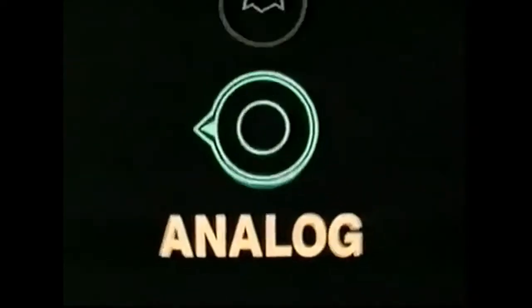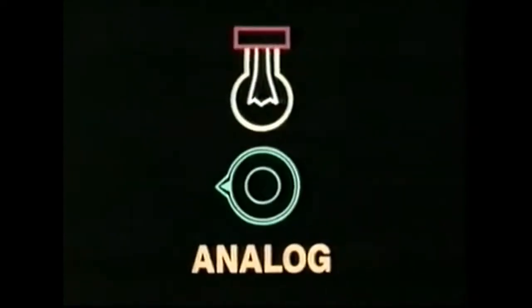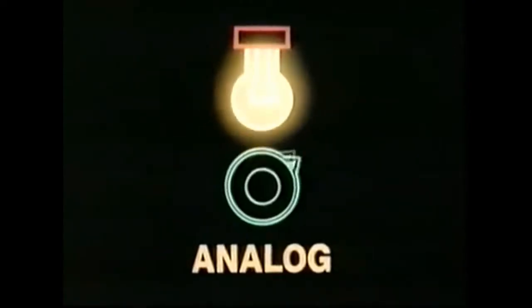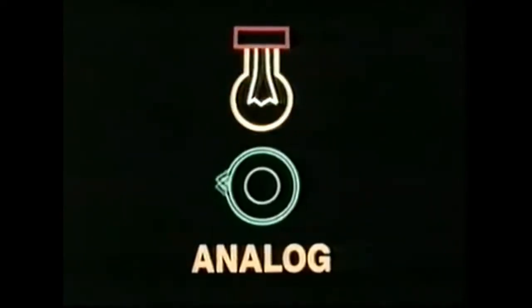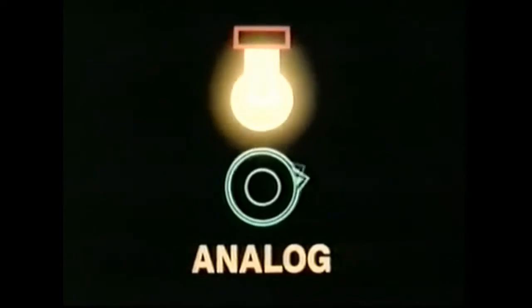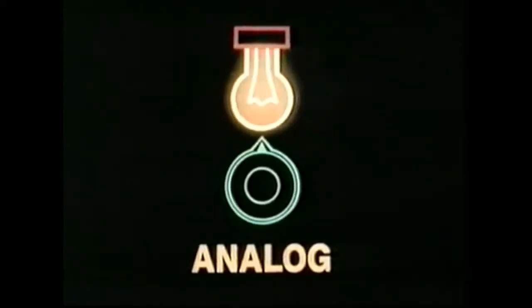one of the commonest analog devices is a dimmer. The turning of the knob corresponds to the fading up or down of the light. It is a continuously variable device. The light can be more or less on.